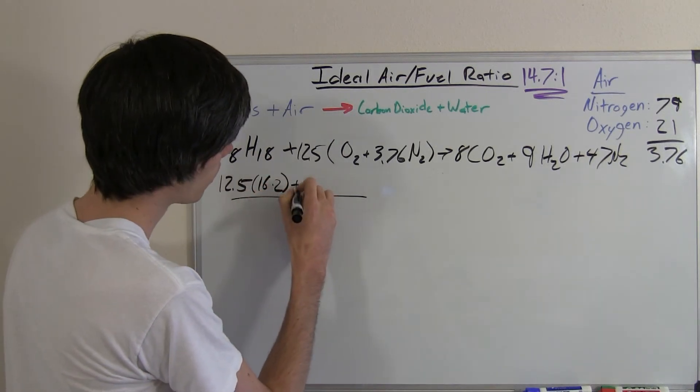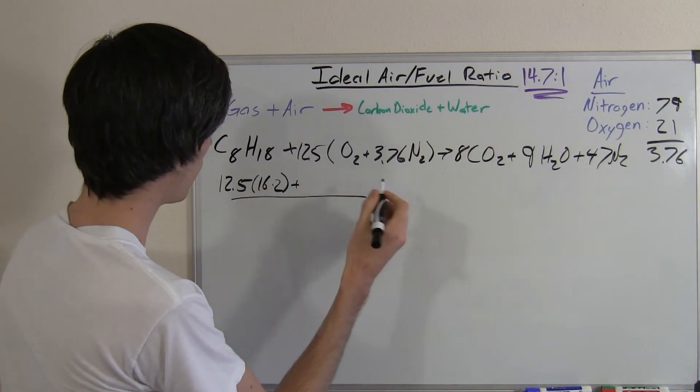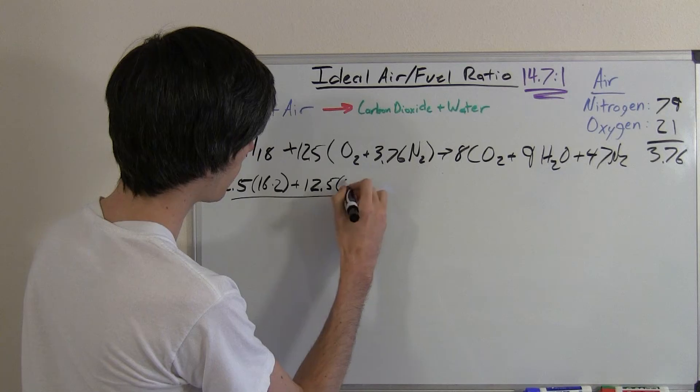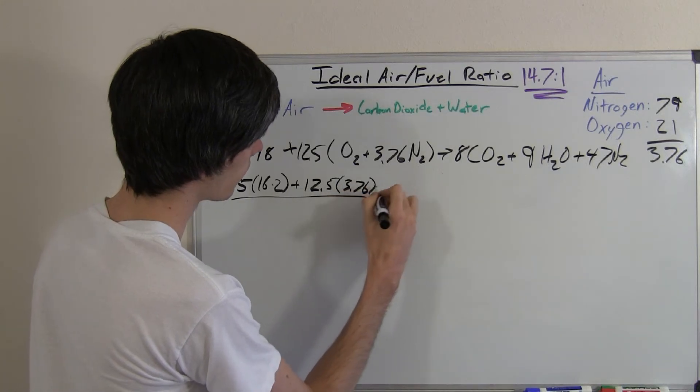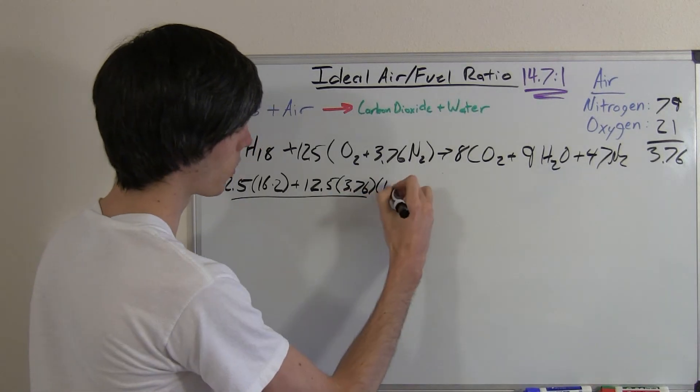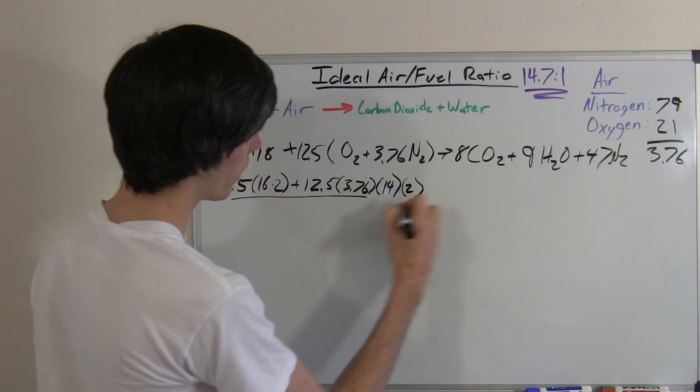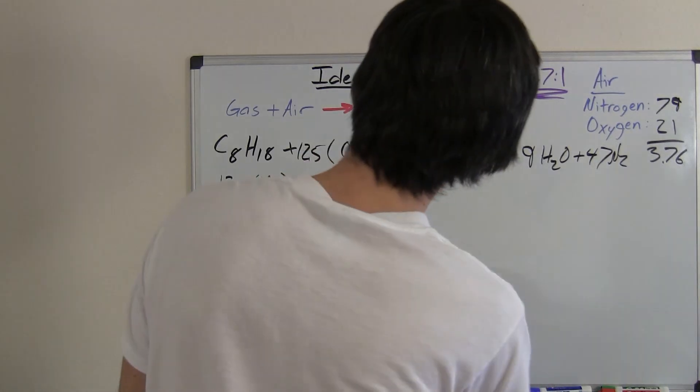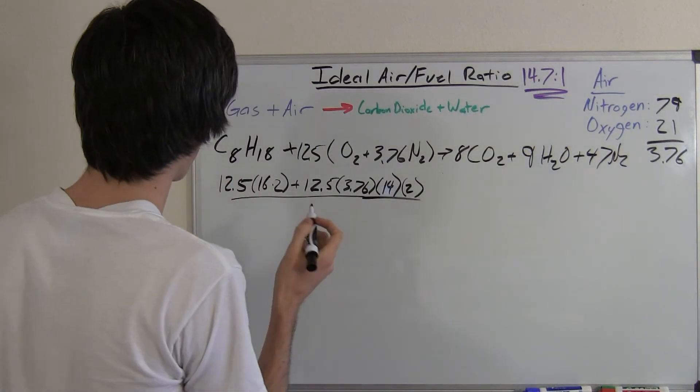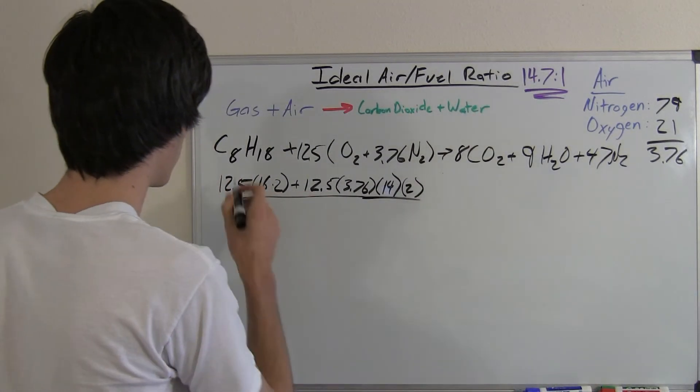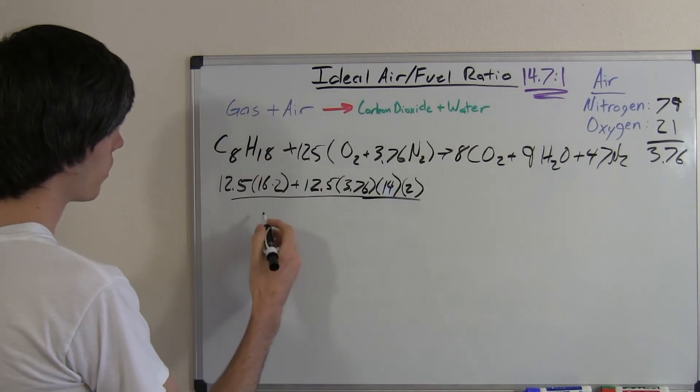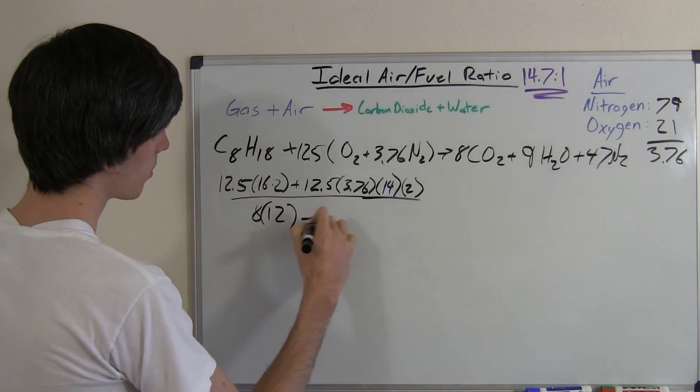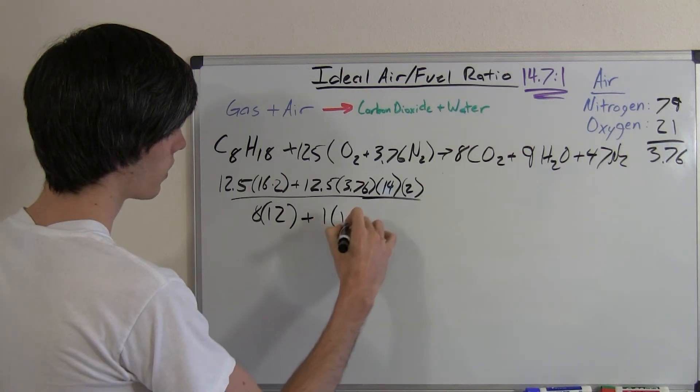plus, we're going to add to that 12.5 times 3.76. Nitrogen has an atomic weight of 14, and also there are two of those. Multiply that by 2. So, on the bottom of that, what we've got going on is C8H18. So you've got 8 molecules of carbon, atomic weight of 12, plus 1 molecule of hydrogen, atomic weight of 18.